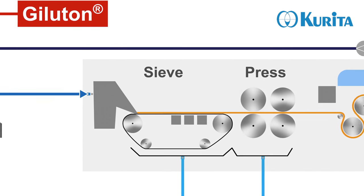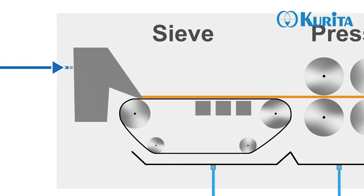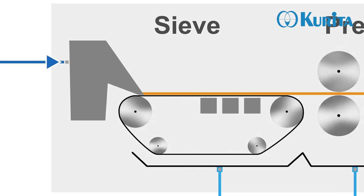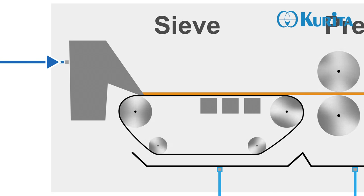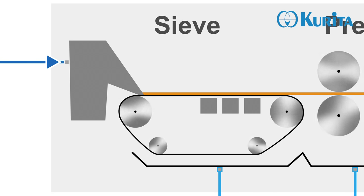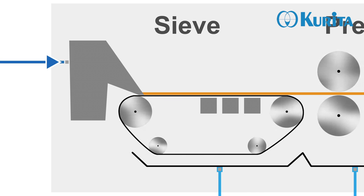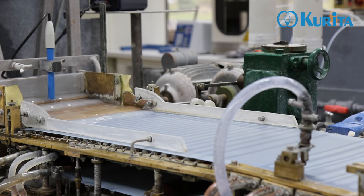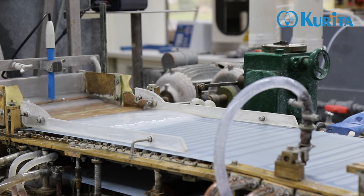The liquid wet strength agent is added to the pulp-water mixture before the head box. At the head box of the paper machine, 99% water contains only one percent of fiber.